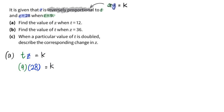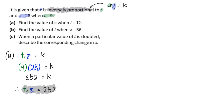We are given the values of t and z, which enables us to find k. In this case, k equals 252. So we have our equation — which is very important because it will help us find parts a, b, and c. Now that we have the equation connecting t and z, let's continue to part a.